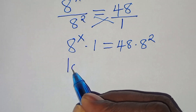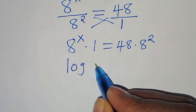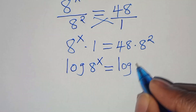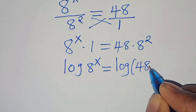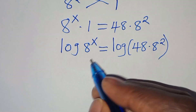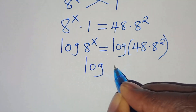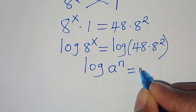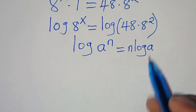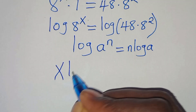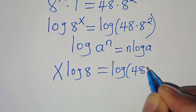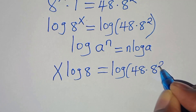To solve for x, we introduce logarithm on both sides, so we have log of 8 to the power of x equals log of 48 multiplied by 8 to the power of 2. Now log of a to the power of x is in the form log(a^n), which can be expressed as n·log(a). Applying this power property, log of 8 to the power of x becomes x·log(8), equal to log of 48 multiplied by 8 to the power of 2.